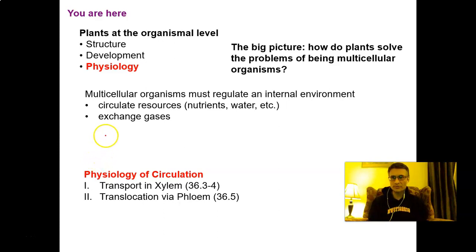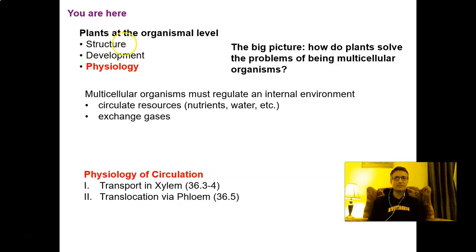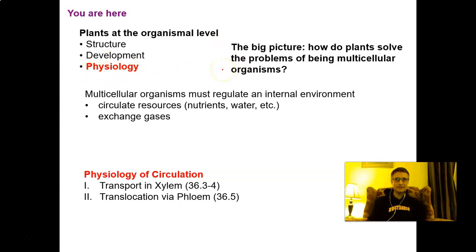Hello, and welcome to our third and final topic as we consider plants at the organismal level. Remember that in our first lecture on this topic, we talked about the structure of plants, including their organs, their tissue systems, and their cells. We then thought about how these various structures developed. And finally, we're going to think about what is going to happen internally in this organism — all part of how we try to figure out how plants solve the problems of being multicellular organisms.